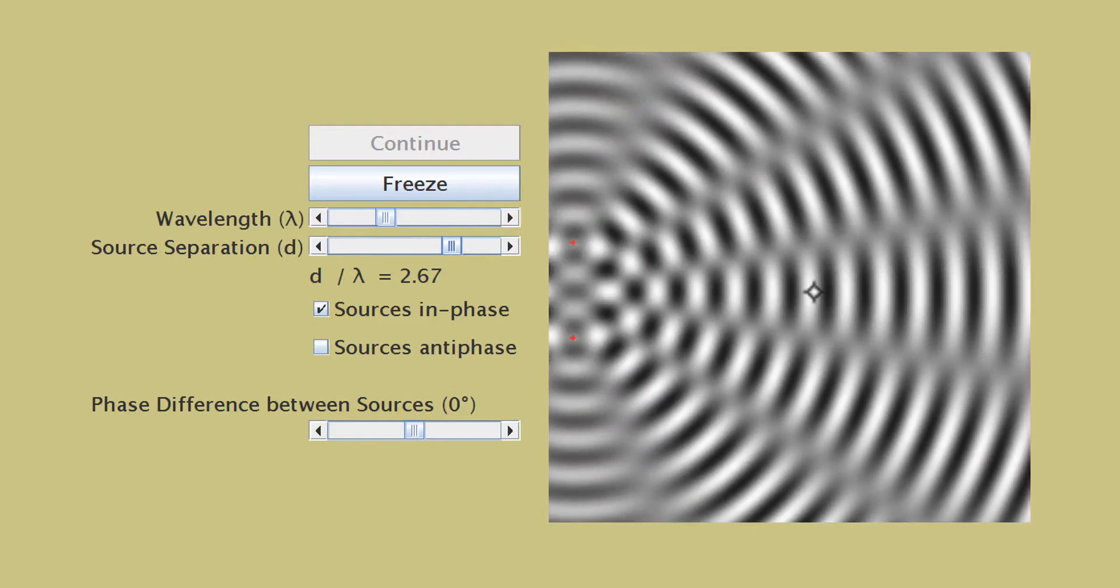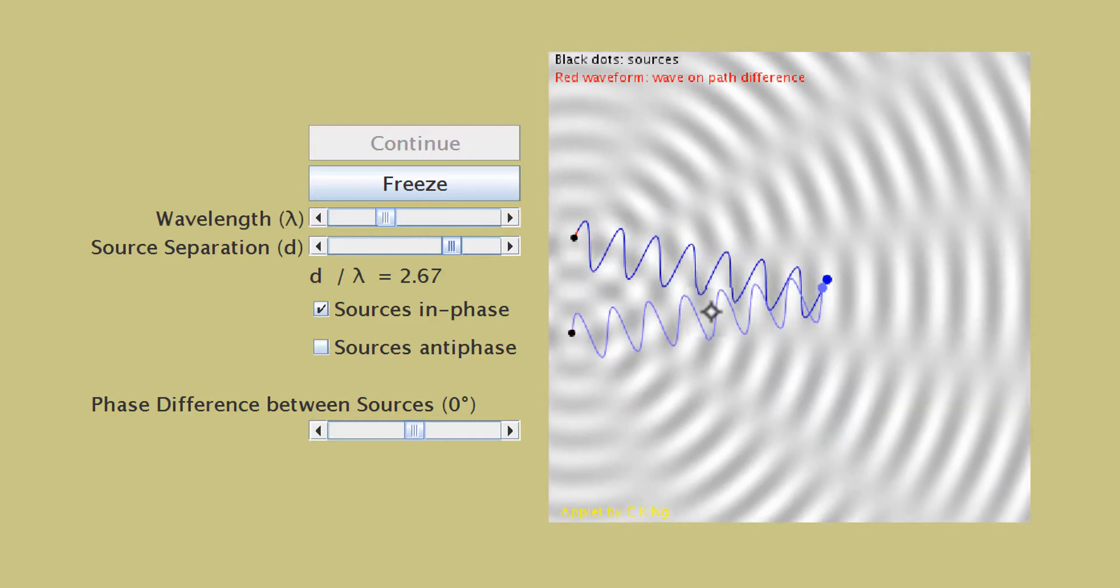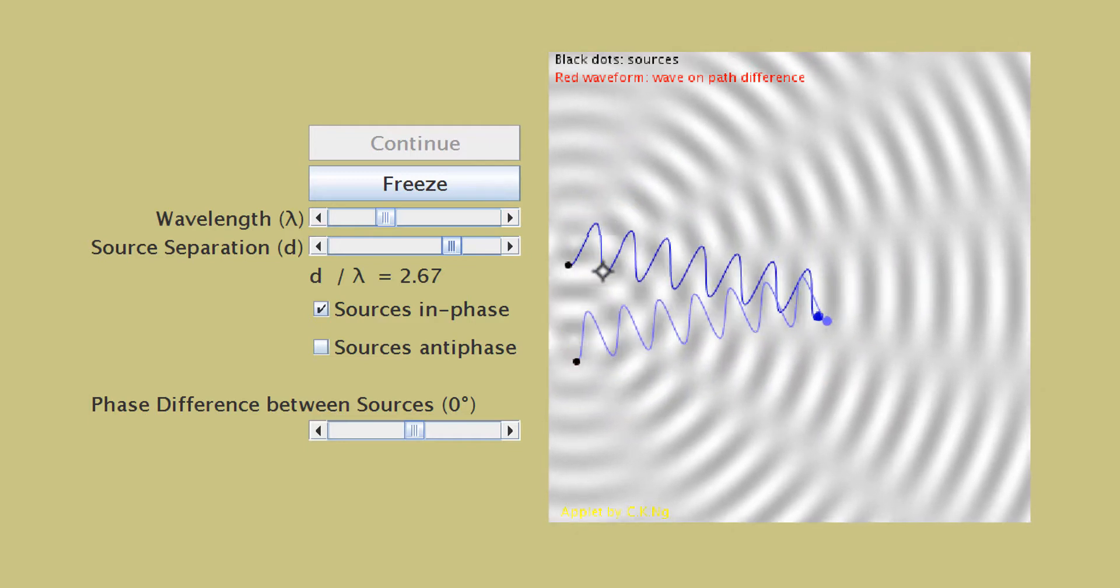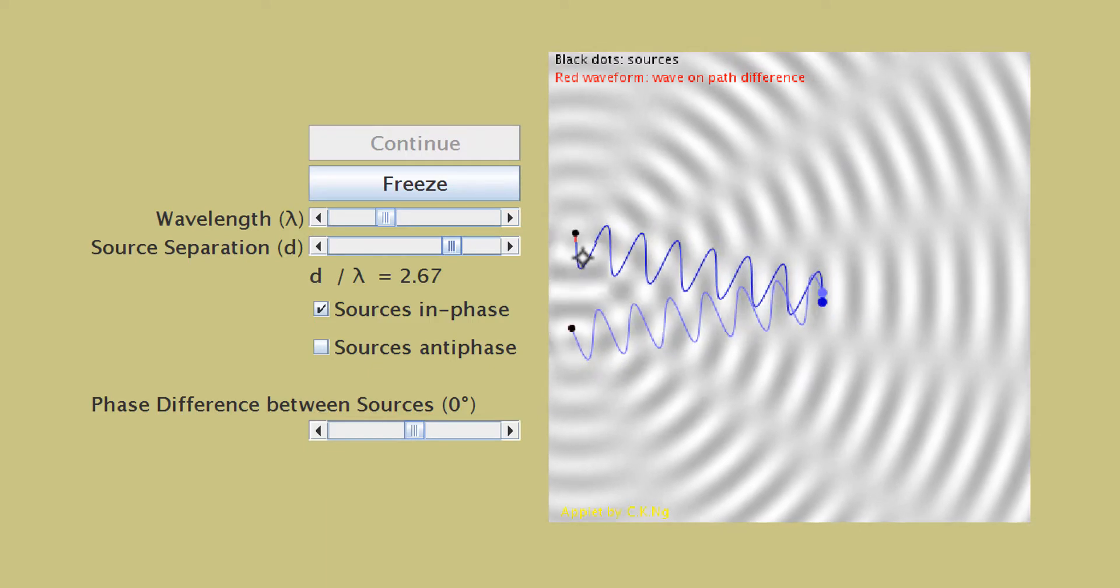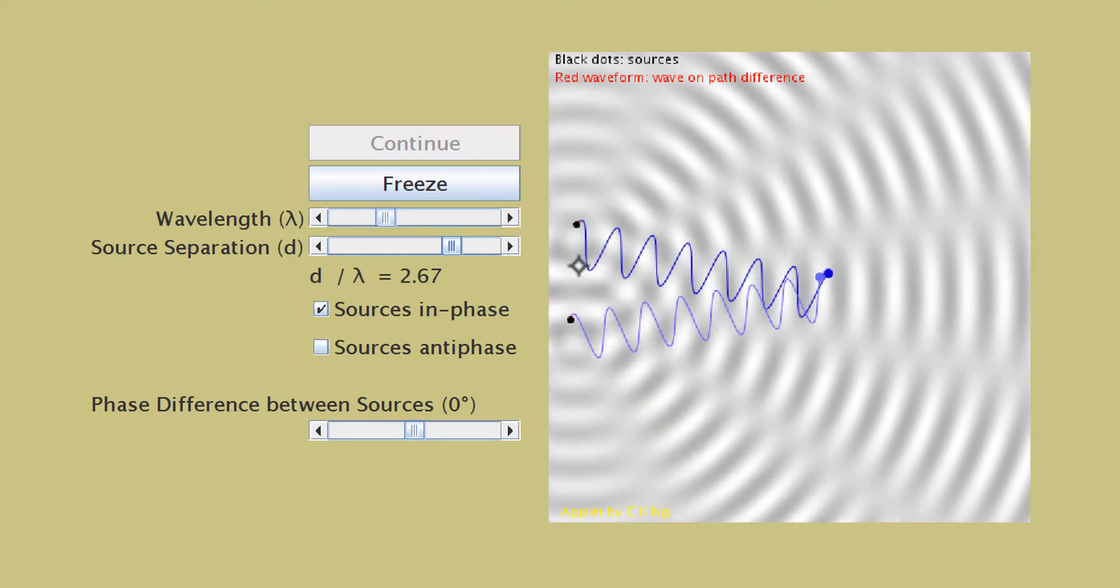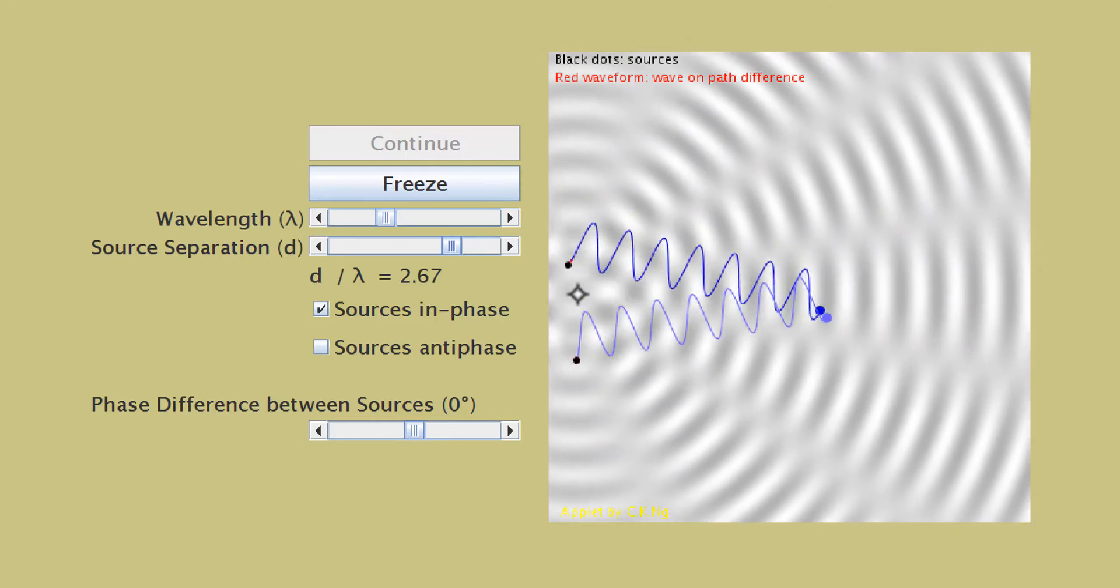Now, if I click on the point here, the applet is going to show you how the waves leave the two dippers and arrive at that point. You can see very clearly that the waves leave the sources in phase. See the two black dots here? They go up and down together in phase.